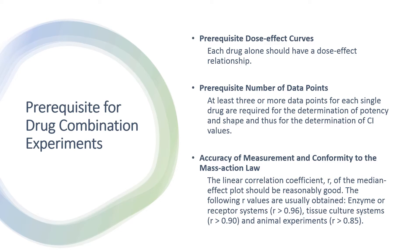Second, prerequisite number of data points: at least three or more data points for each single drug are required for the determination of potency and shape, and thus for the determination of CI values. For combinations in contrast, any number of data points can be used for the CI calculations. Third, accuracy of measurement and conformity to the mass action law: the linear correlation coefficient, or R, of the median effect plot should be reasonably good.